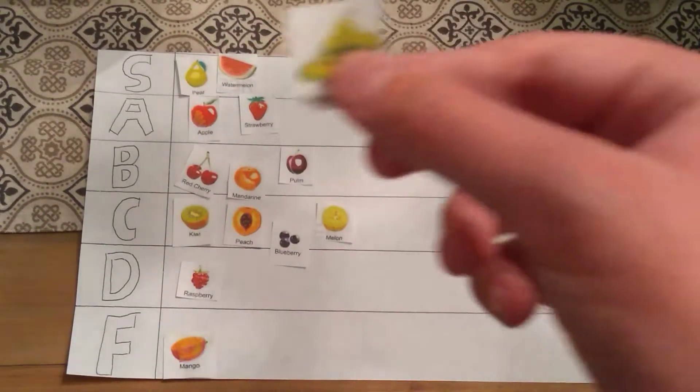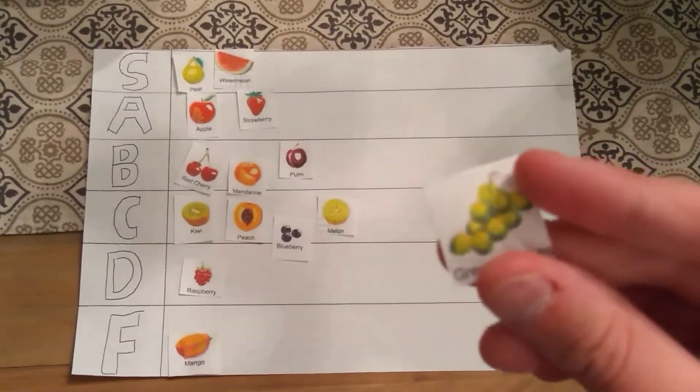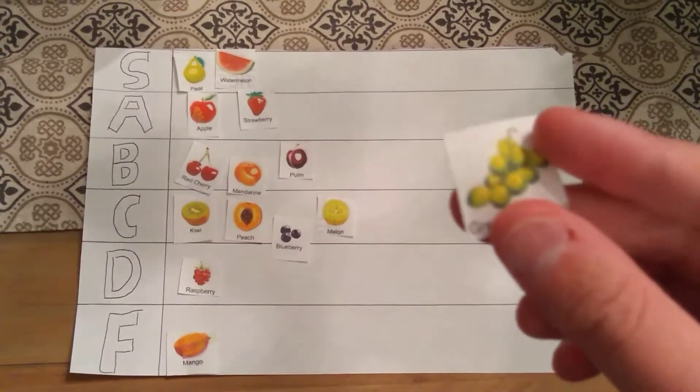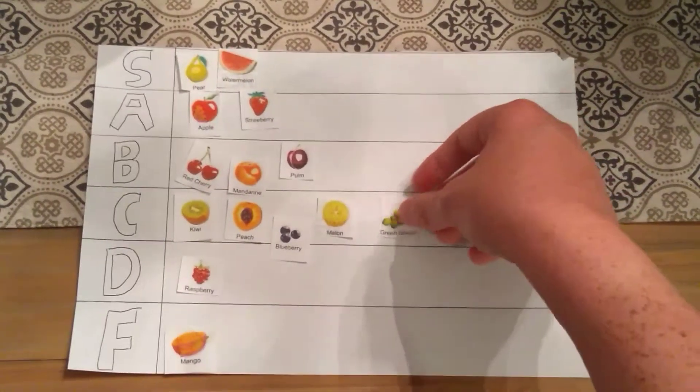Next up, we have green grapes. Grapes aren't, these grapes aren't as good as the darker shade of grapes. Which is why they're going in the C tier.